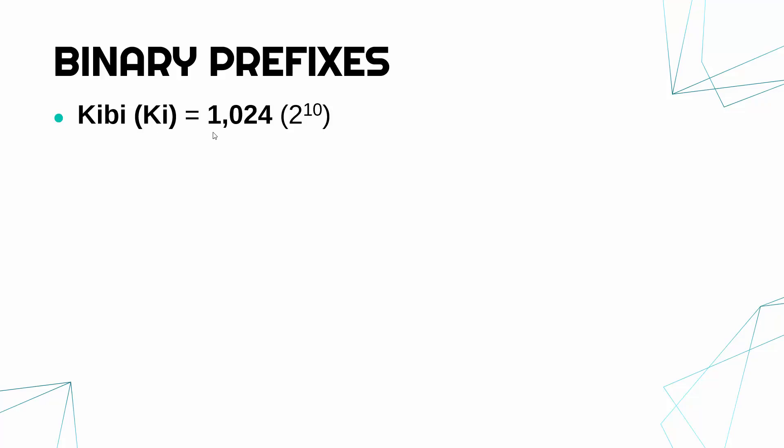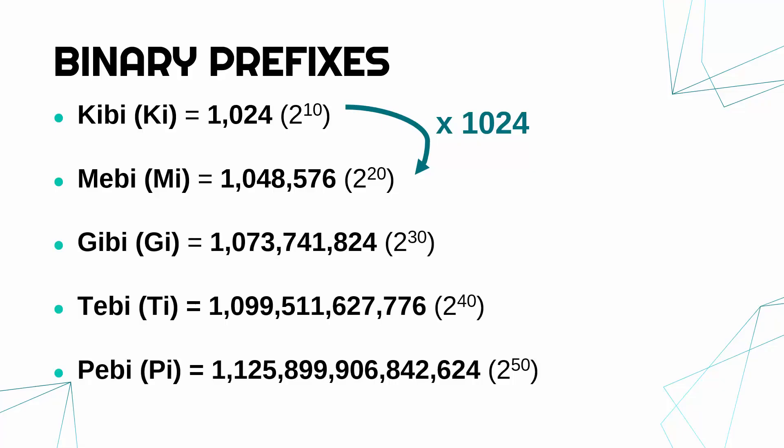Mebi (Mi) is 1,048,576—so not quite as neat as a million. And these units, instead of going up by times by a thousand, they times by 1,024 each time. So the numbers do get a bit awkward. We have got binary equivalents of each of our metric units.